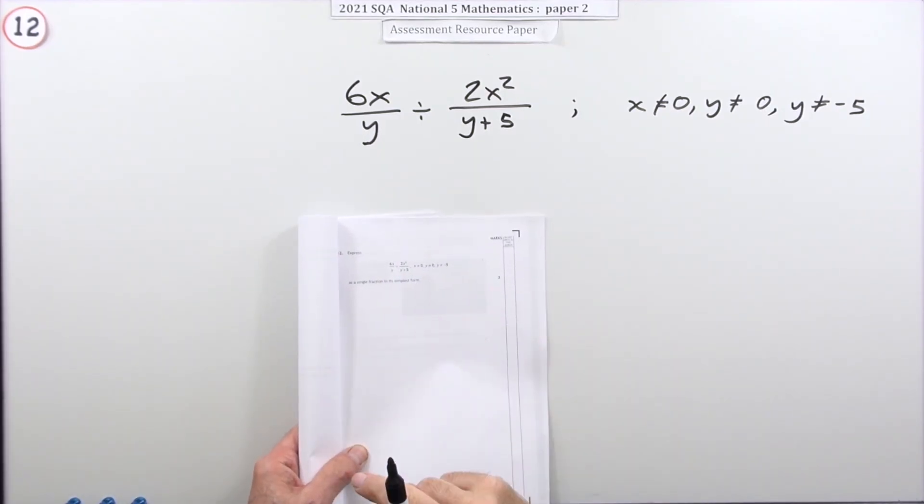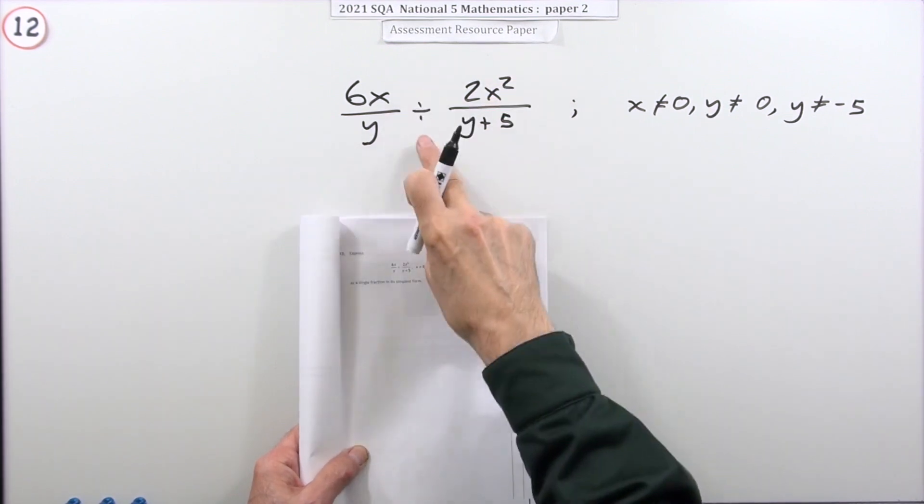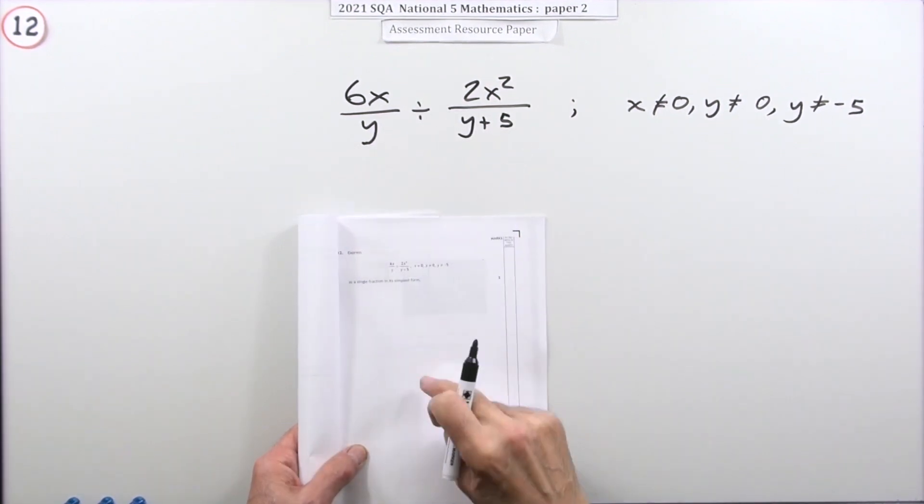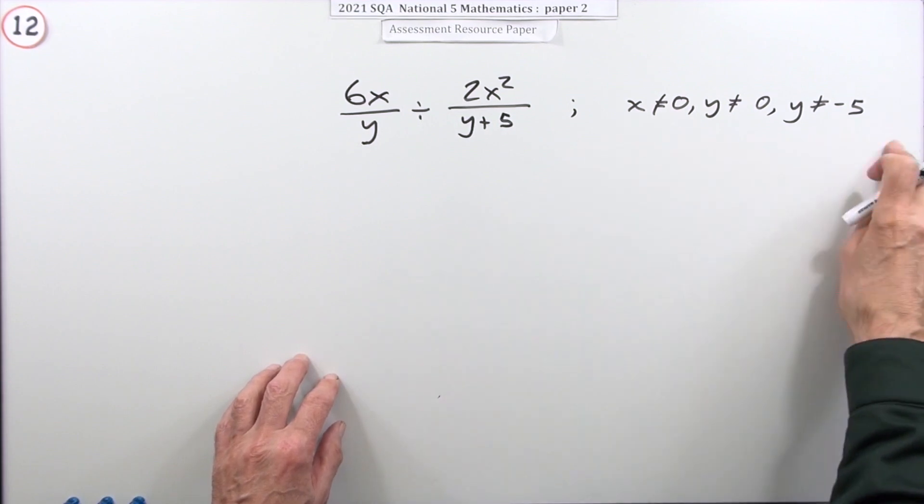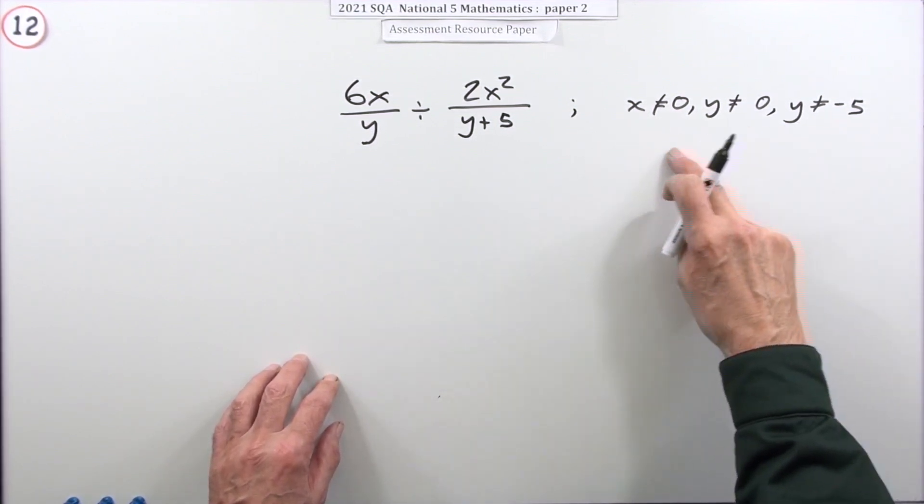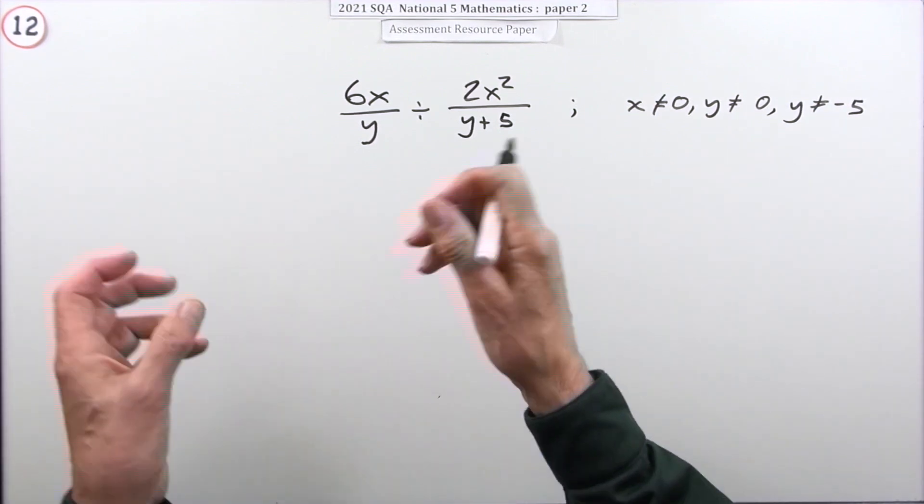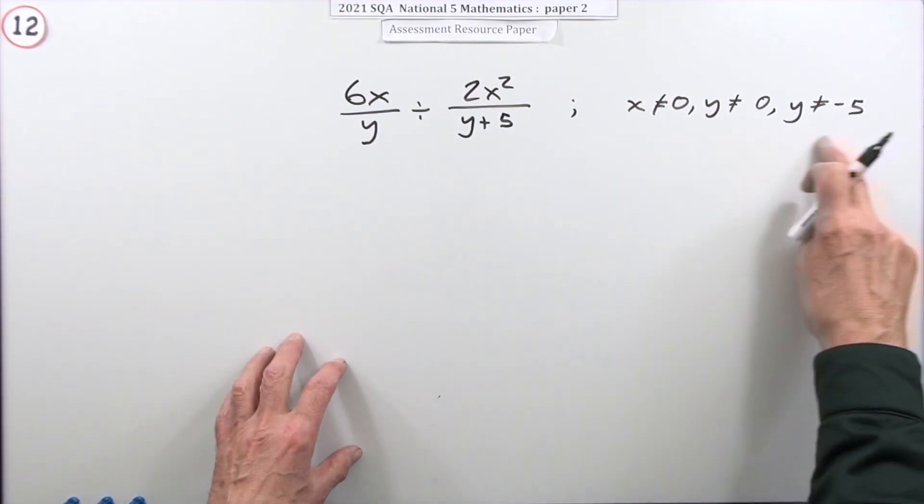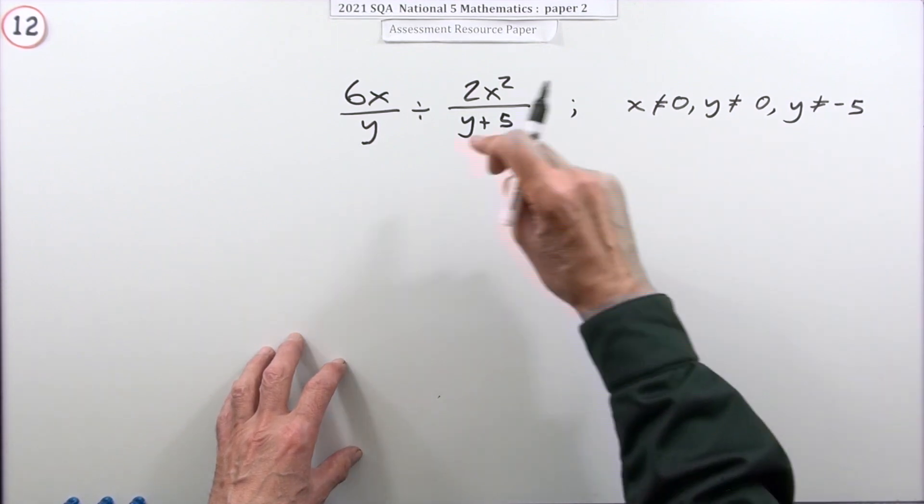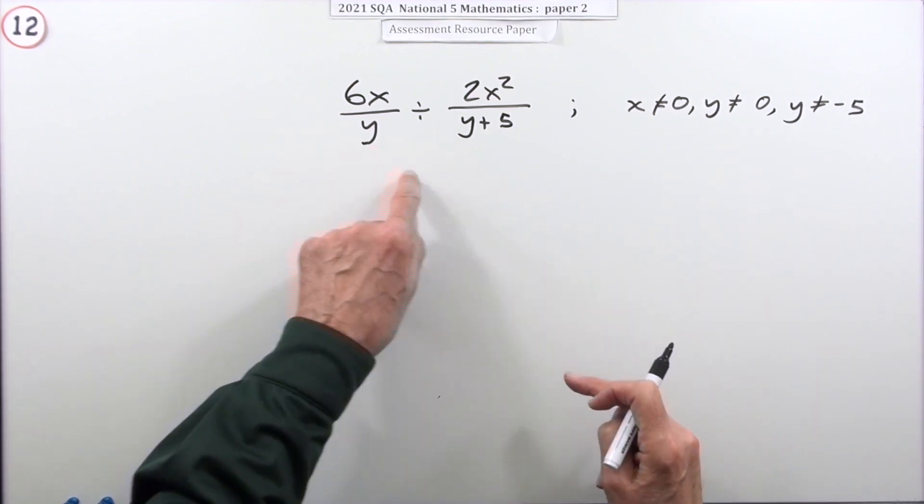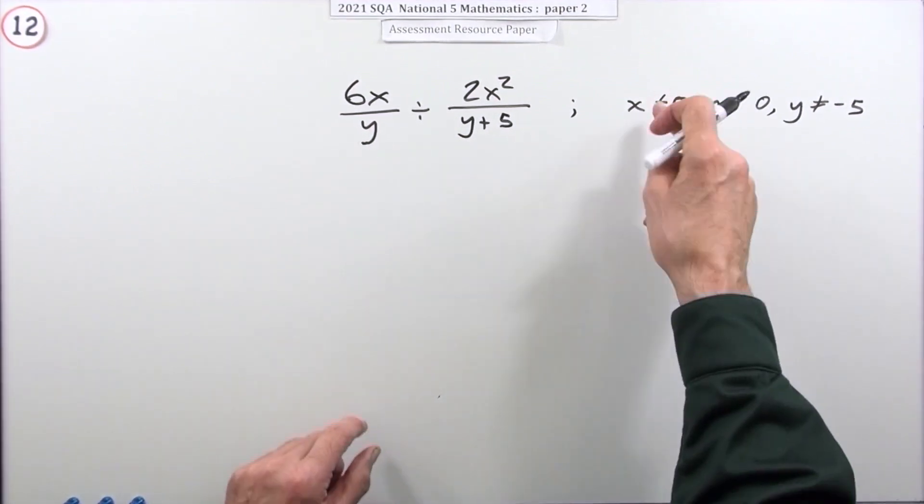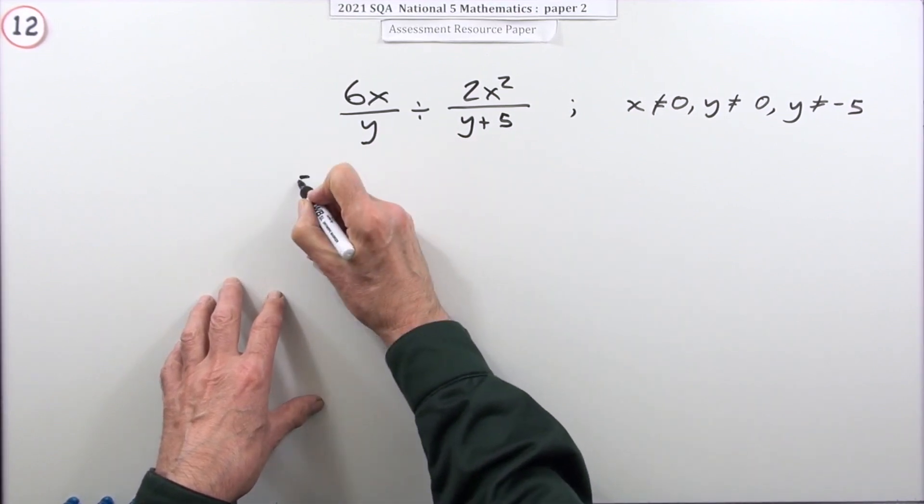So number 12 for three marks: express this division of two fractional expressions as a single fraction in its simplest form. It's actually fairly straightforward. Now this little bit at the side—these statements here—are just like a disclaimer, like a legal disclaimer you get inside a bleach bottle that would say 'don't drink this.' So this just says don't try putting any of these numbers into this because it'll just blow up, because you can't divide by zero if y was zero, if y was negative five, and later you'll see the x.